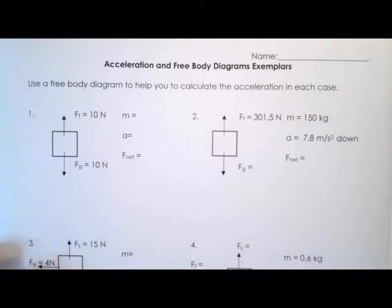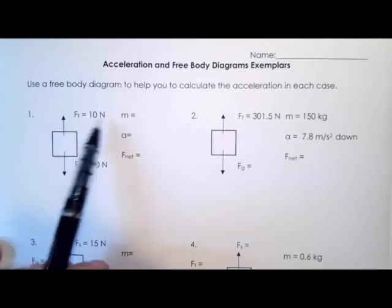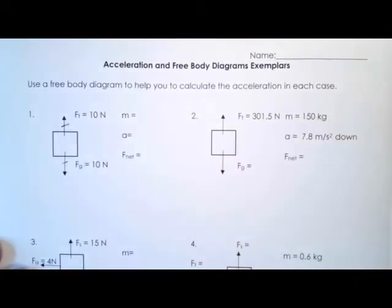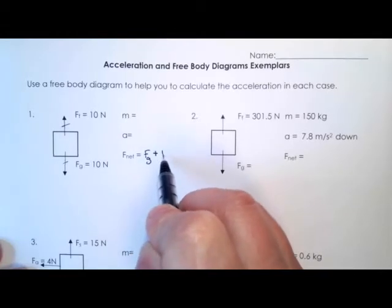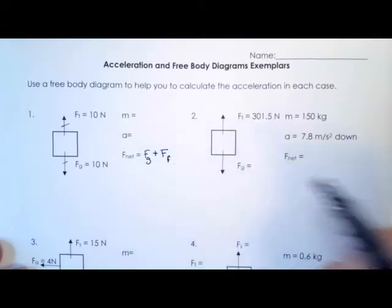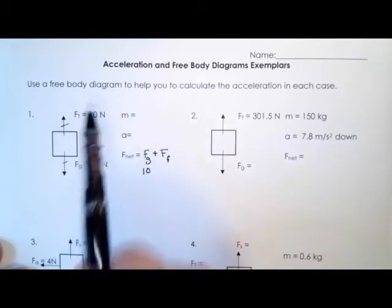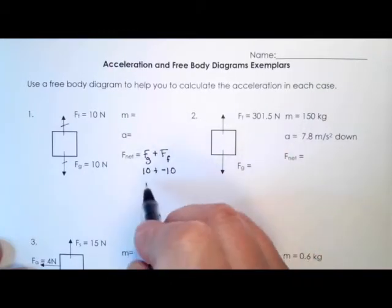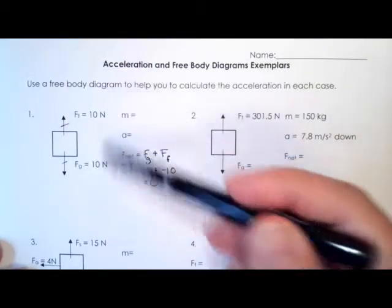So our first one is probably pretty simple. We have a force of gravity of 10 N and a force of friction which is also 10 N, and I would show that those are exactly equal to each other. The net force is the force of gravity plus the force of friction. So we have 10 and because the force of friction is in the opposite direction, that would be negative 10. So 10 minus 10 equals zero. So there's no net force on this object.